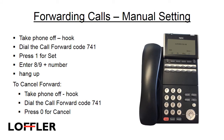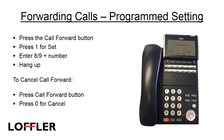To forward calls, take your phone off hook, dial the call forward code 741, press 1 for set, enter your trunk access code and the number you would like your calls forwarded to, and then hang up. To cancel the forward, take the phone off hook, dial the call forward code 741, and press 0 for cancel. If you have a programmed button for call forward, press the call forward button, press 1 for set, enter your trunk access code and the forwarding number, and hang up. To cancel, press the call forward button and press 0 for cancel.